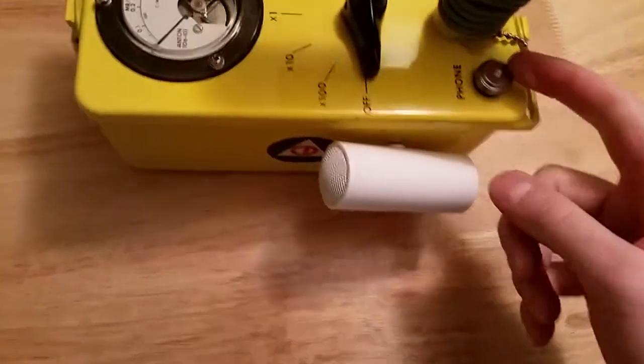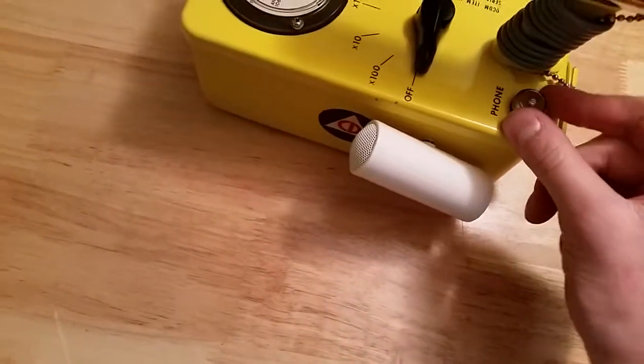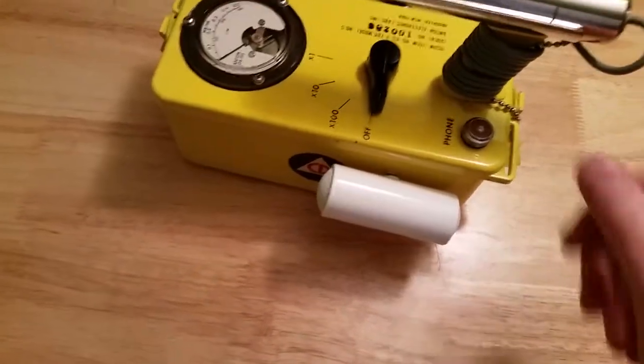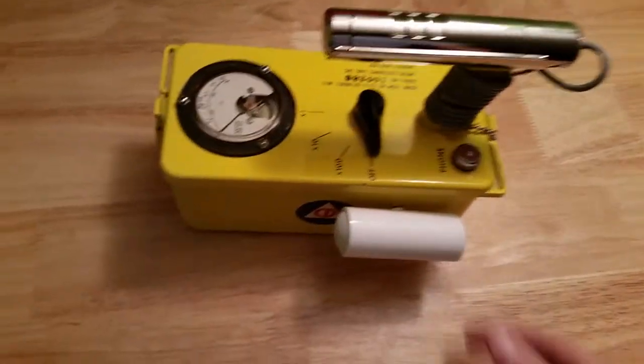I forget the name of it. It's not a PL259, it's something else. It's like a type of connector that those old harp mics take, it's like a screw on thing. I have a couple around here somewhere.